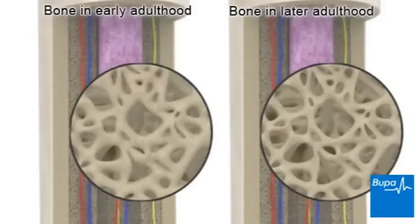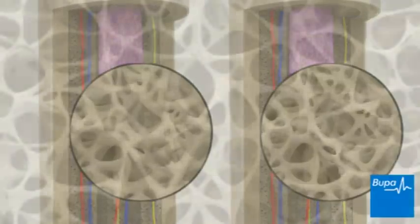After your mid-thirties your bone is broken down faster than it's replaced, so our bones gradually start to decrease in mass. As you age, your bone naturally becomes less dense and weaker. Women lose bone mass more quickly for some time after the menopause.